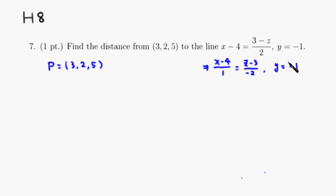Then we can find Q, which is on the line. The x component shows up right here, so it's 4. And the y component shows up here, negative 1. And the z component shows up right here, so that's 3.